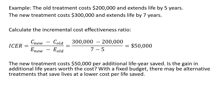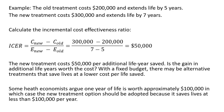Is the gain in additional life years worth the cost? With a fixed health care budget, there may be alternative treatments for other ailments and diseases that save lives at a lower cost per life saved. Some health economists argue one year of life is worth approximately $100,000, in which case the new treatment option should be adopted because it saves lives at less than that threshold of $100,000 per year.